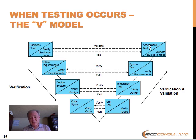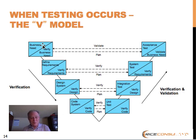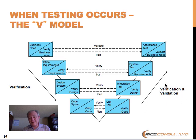When we get up to acceptance test, we're not validating requirements — we're validating business need. It's a real-world test. It's testing against business processes that are performed in the real world. On the bottom right-hand corner of these boxes you'll see: validate business need, verify requirements, verify design, and verify code. So what goes on on the right-hand side is mainly verification, with a little validation at the top in the acceptance test part of the V.